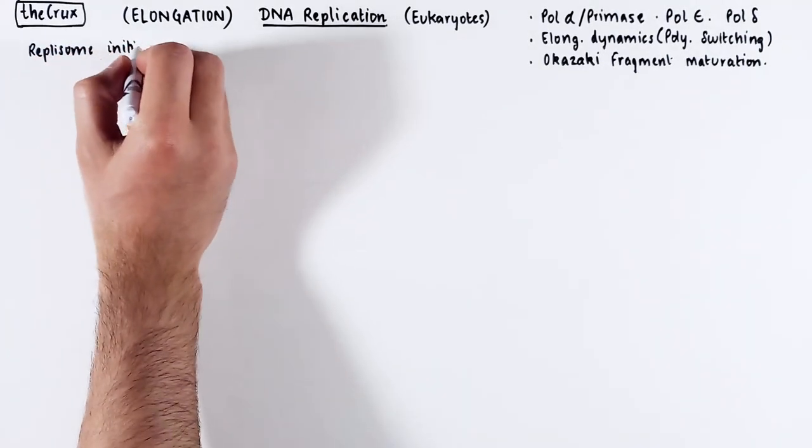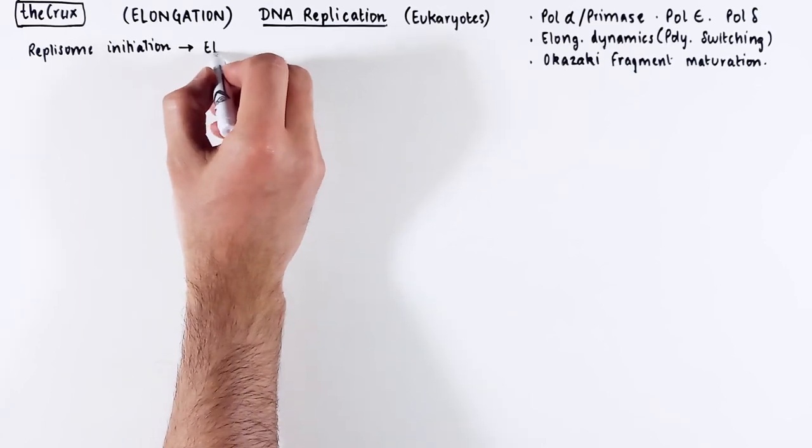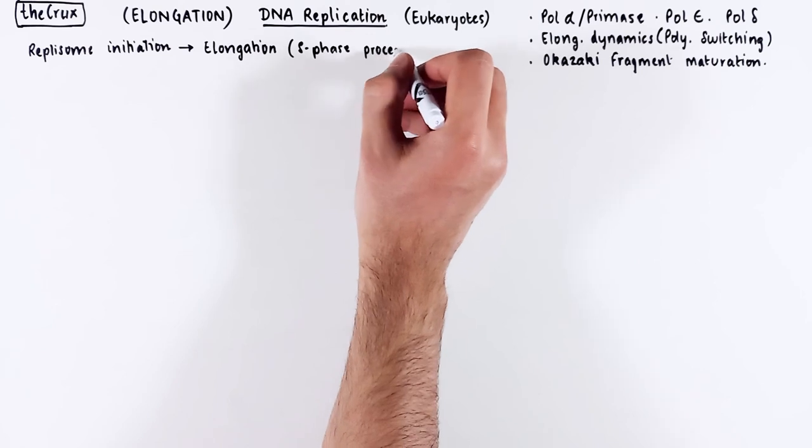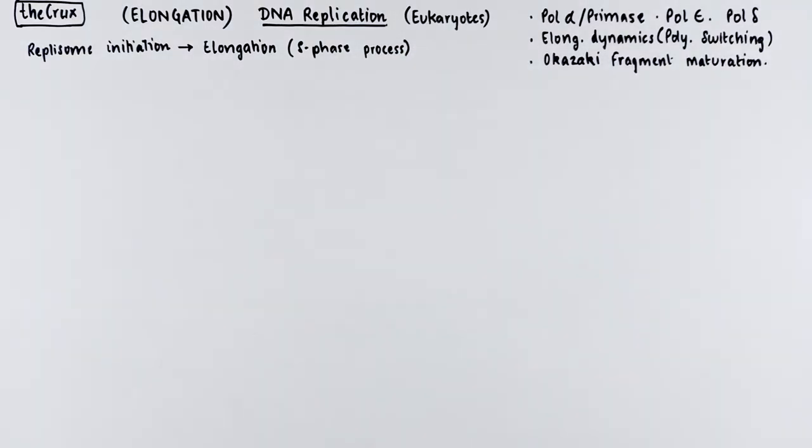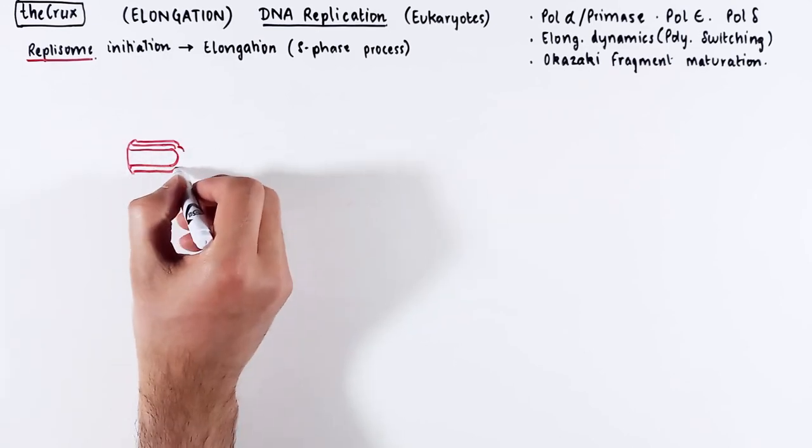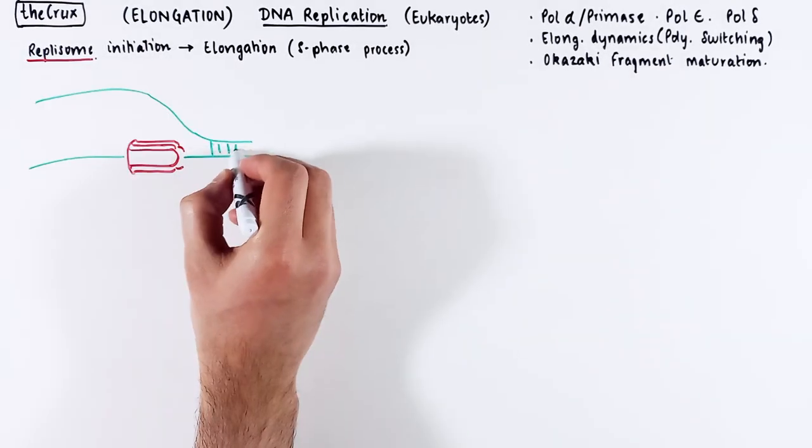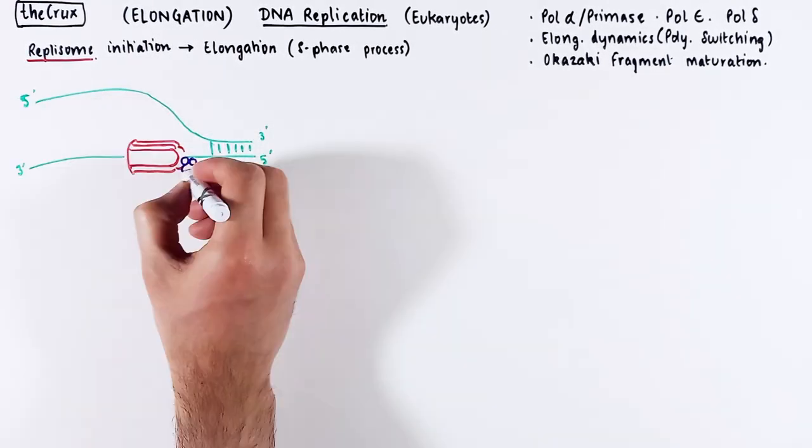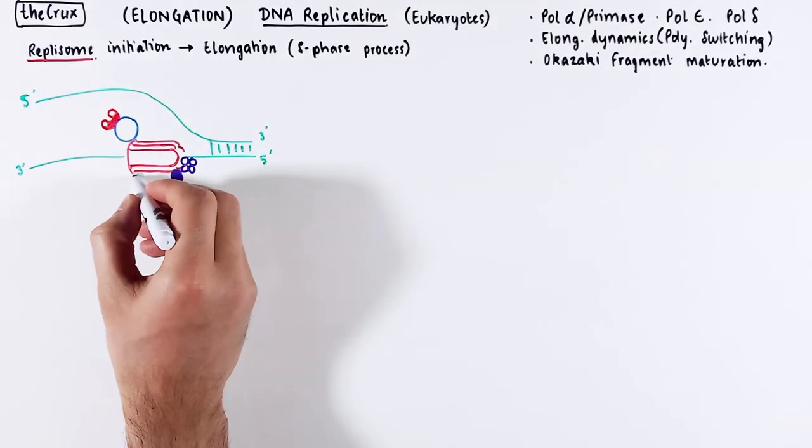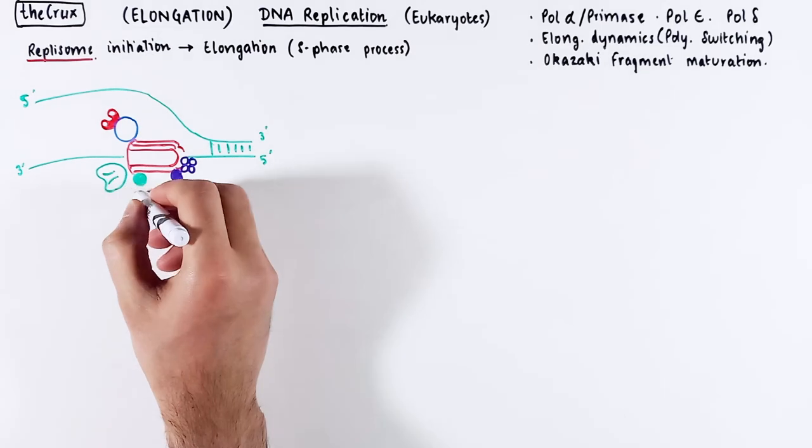I would recommend that you watch the trombone model of elongation video in prokaryotes before you watch this video. Moving from replication initiation, the elongation step is strictly speaking part of the S phase. This follows the origin firing where we saw the replosome assembly.